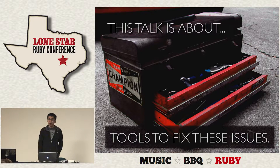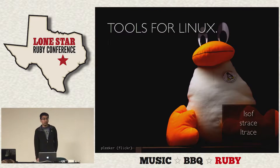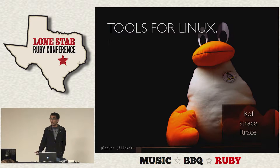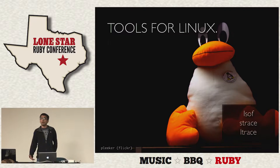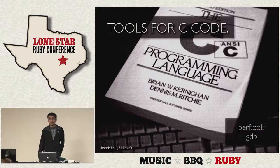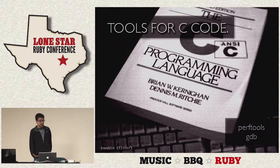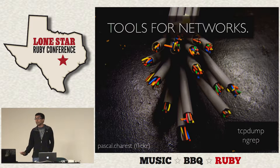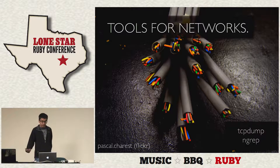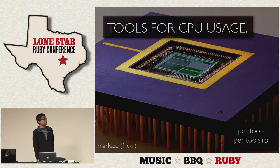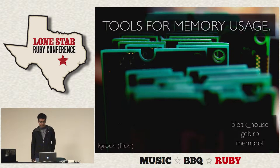We're going to talk about a bunch of tools. These are tools for Linux, since most of us deploy on Linux, and it's useful to debug issues that happen in production. Tools for C code, since MRI and most extensions we use are written in C. Tools for networks, since most of us work on web applications. And tools for CPU and memory usage, since that determines how far we can scale and how much it costs to run our Ruby applications.